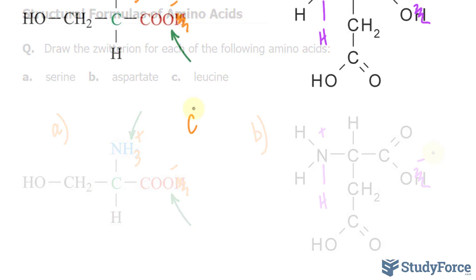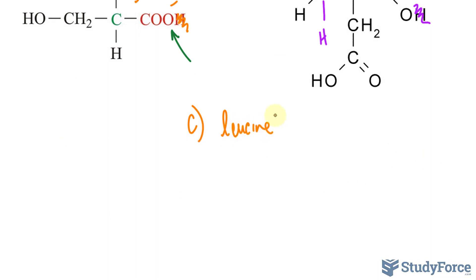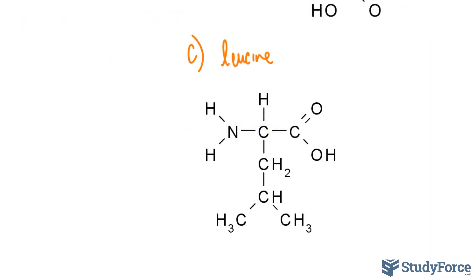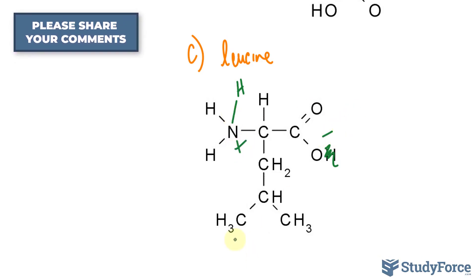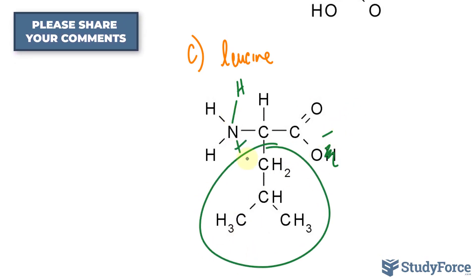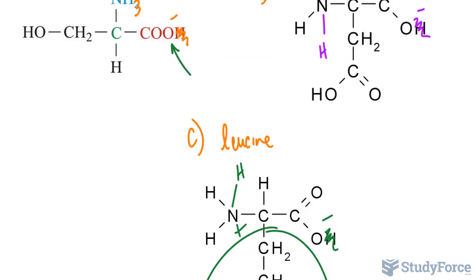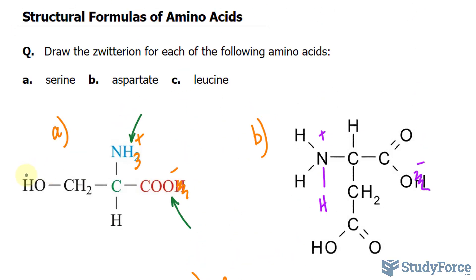Finally, in question C, we have to do this again for leucine. Leucine looks like this. That's the structure, and we'll lose this hydrogen — it will form a bond with the nitrogen, making that positive and this negative. Notice that the R group here is nonpolar, unlike for example in serine, where we had this hydroxyl at the very end, or this carboxyl group in aspartate. So there you have it — a quick introduction to zwitterions and the structural formulas of amino acids.